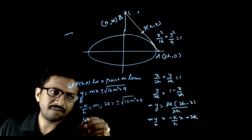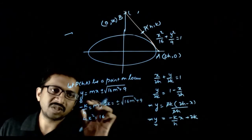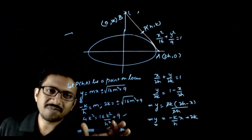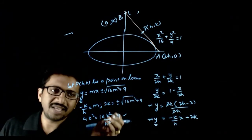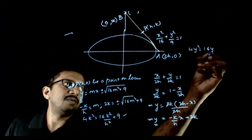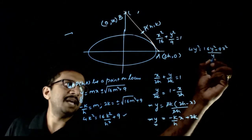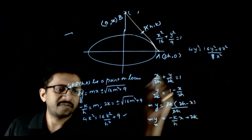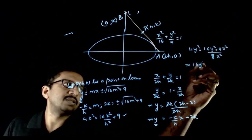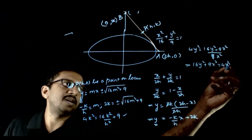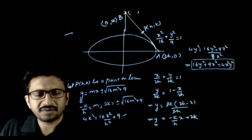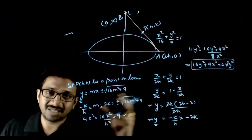Squaring both sides gives 4k² = 16(k²/h²) + 9. Now you have an equation completely in terms of h and k. Replacing h with x and k with y gives the locus: 4y² = (16y² + 9x²) / x², which implies 16y² + 9x² = 4x²y². This is the required equation of the locus, as shown in the software.